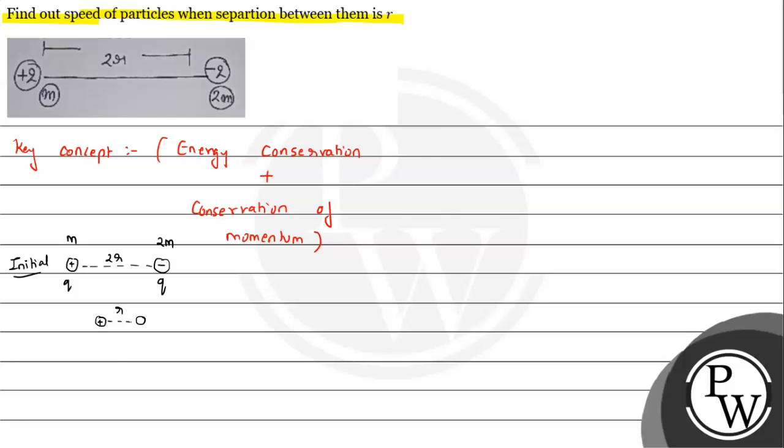At this moment, the plus charge is here, minus charge is here. This is m, this is 2m. Let's suppose the velocities are v1 and v2. We are asked to find these. Initially, the velocities are u1 equals u2 equals 0 since both are released from rest.